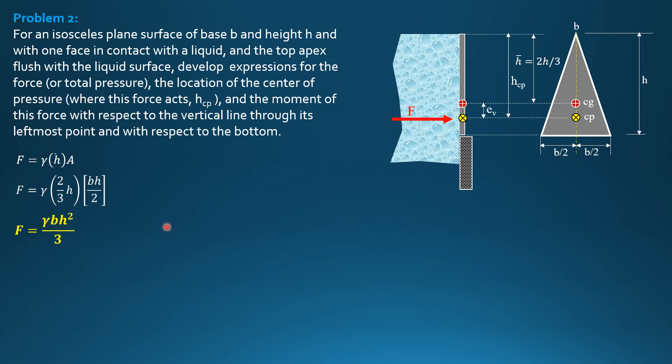Next, for hcp, let's solve for e sub v. I sub cg over area barred h. The moment of inertia, that's barred h. The moment of inertia of a triangle with respect to the centroid is bh cubed over 36. The area is bh over 2. And barred h is two-thirds of h from the figure. So we can cancel 2. So 3 in the numerator, cancel bh squared. So 3 over 36 of h is h over 12. E sub v is h over 12. Therefore, hcp is two-thirds of h plus e sub v. Two-thirds of h plus h over 12. So hcp is three-fourths of h. So F acts through the center of pressure, three-fourths of h from the apex, from the liquid surface.